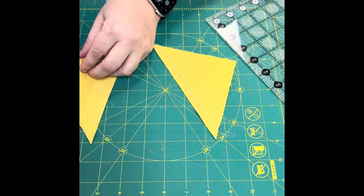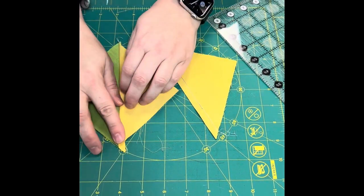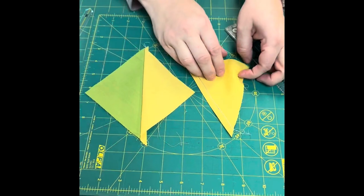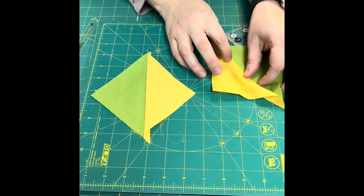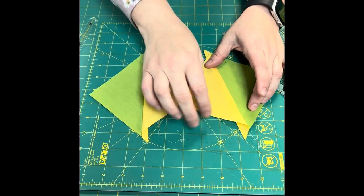And here you go. Now I have two half square triangles that I will press open and they will be able to be trimmed to a four and a half.